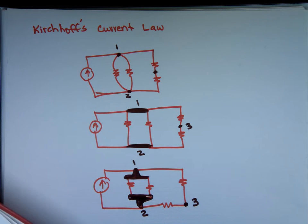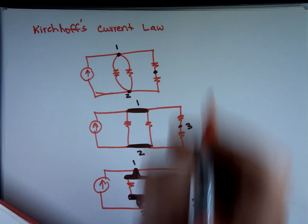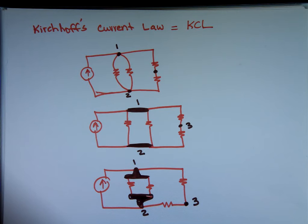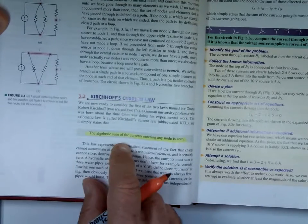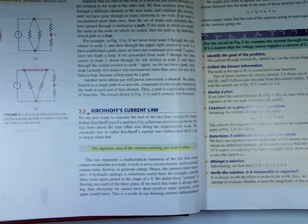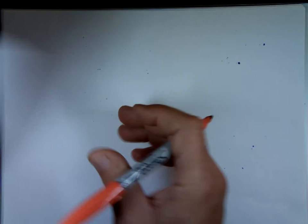The other thing you're going to hear is the word loop when we talk about Kirchhoff's Current Law — a path, a loop. We'll wait on that. So Kirchhoff's Current Law — we call it KCL in circuits; that's not just me, it's a common name. There's also Kirchhoff's Voltage Law, KVL. Kirchhoff's Current Law says: the algebraic sum of the currents entering any node is zero.